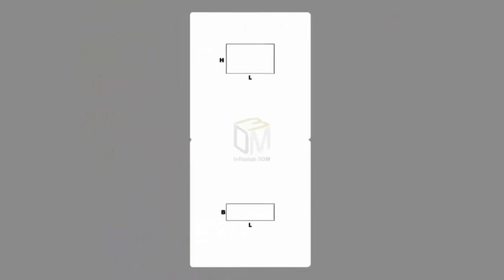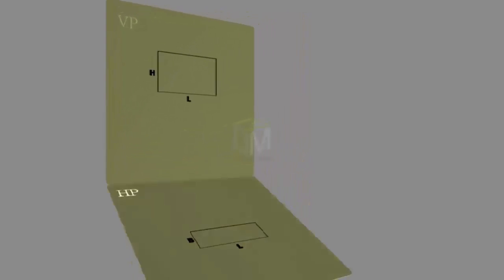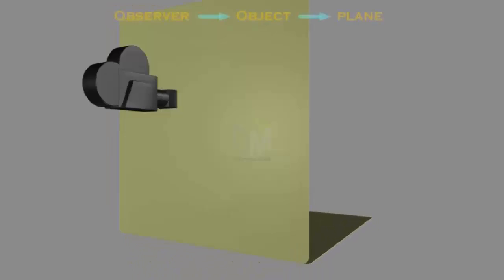The top view comes below front view. To get the left side view, look at the object from the left side and again check the setup. Now the setup is observer, plane, object. This is a violation.